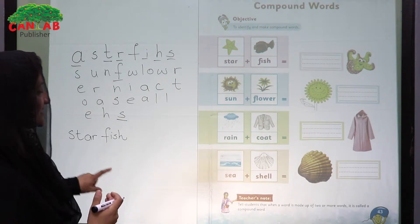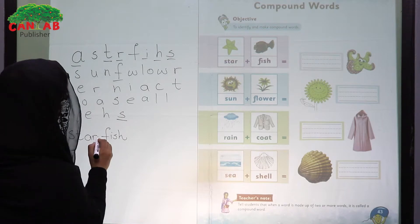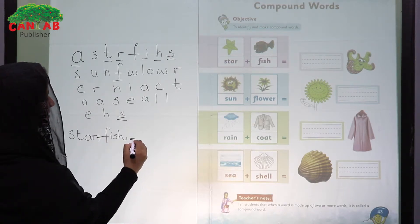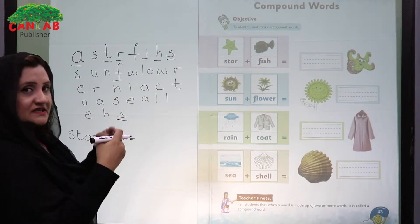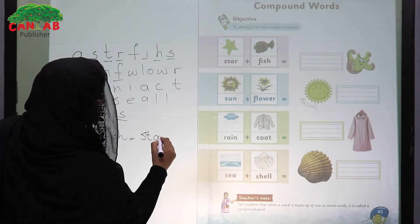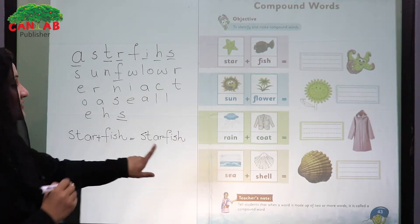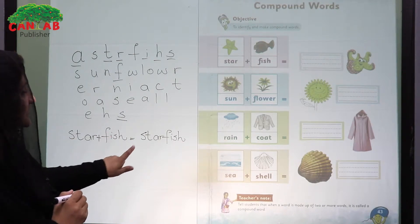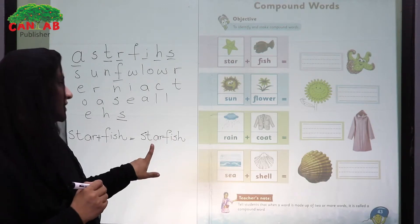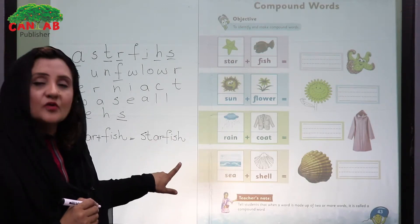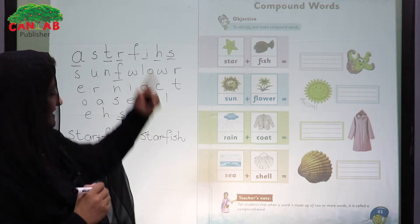You can tell them that when we have two words and we join those two words, we have a new word. For example, star and fish — when we join these two words, we have 'starfish,' and this is a new word. So, when a word is made up of two or more words, it is called a compound word.